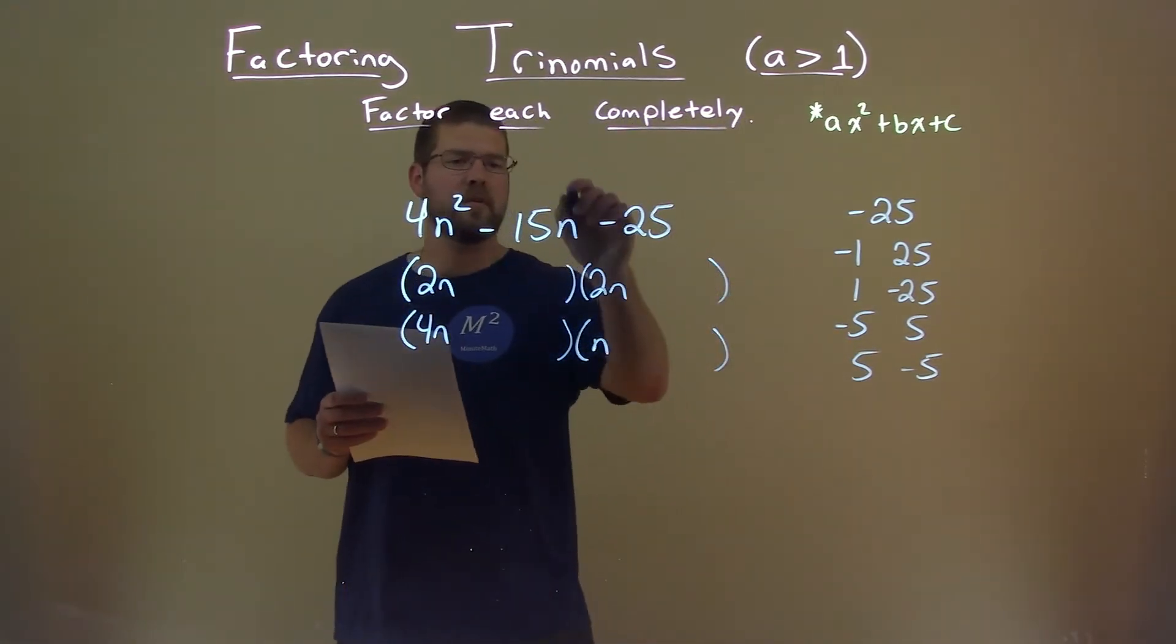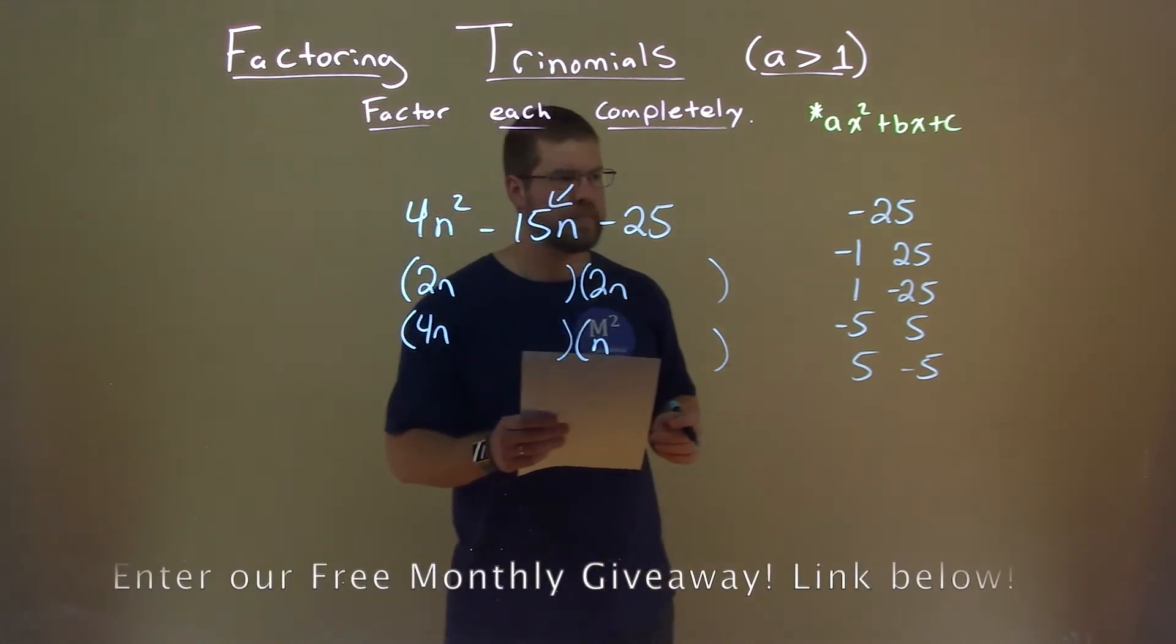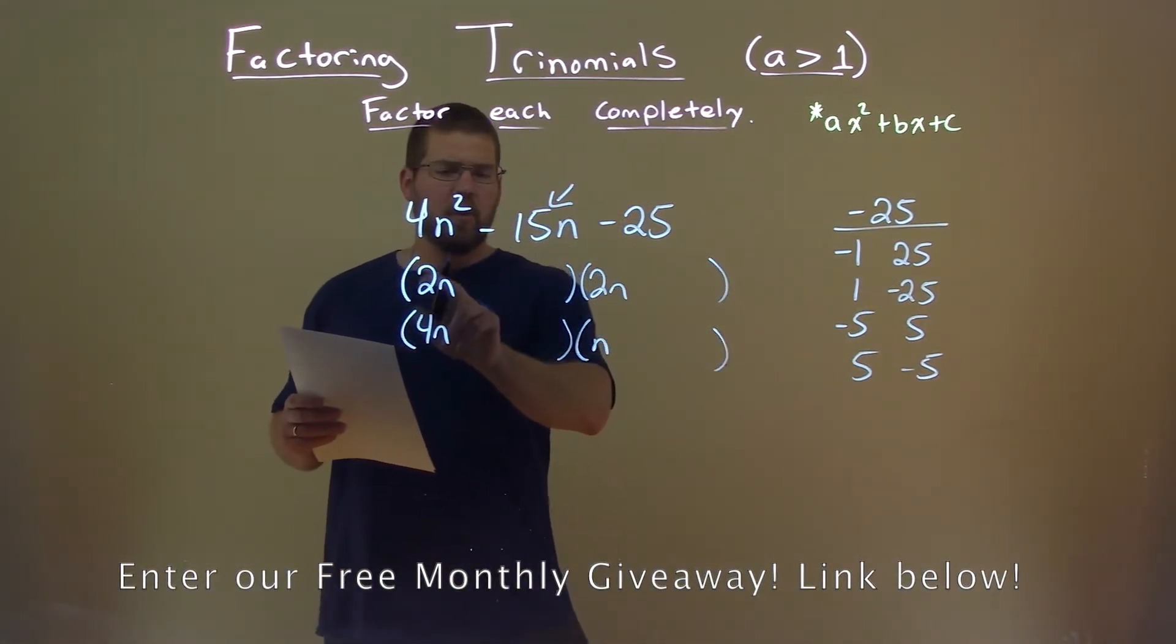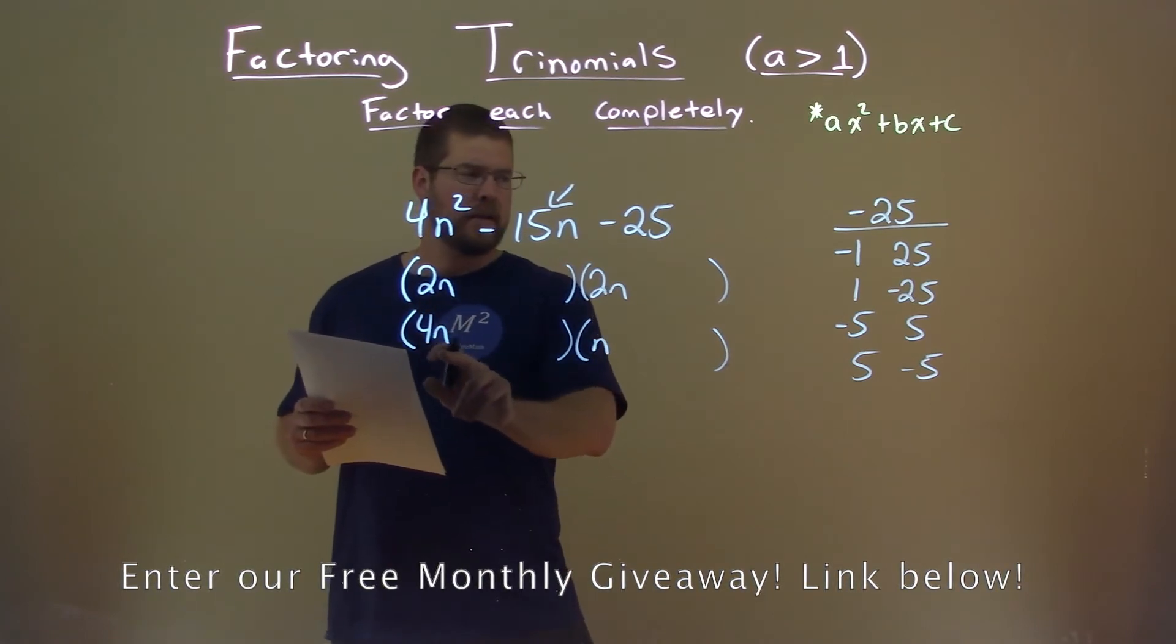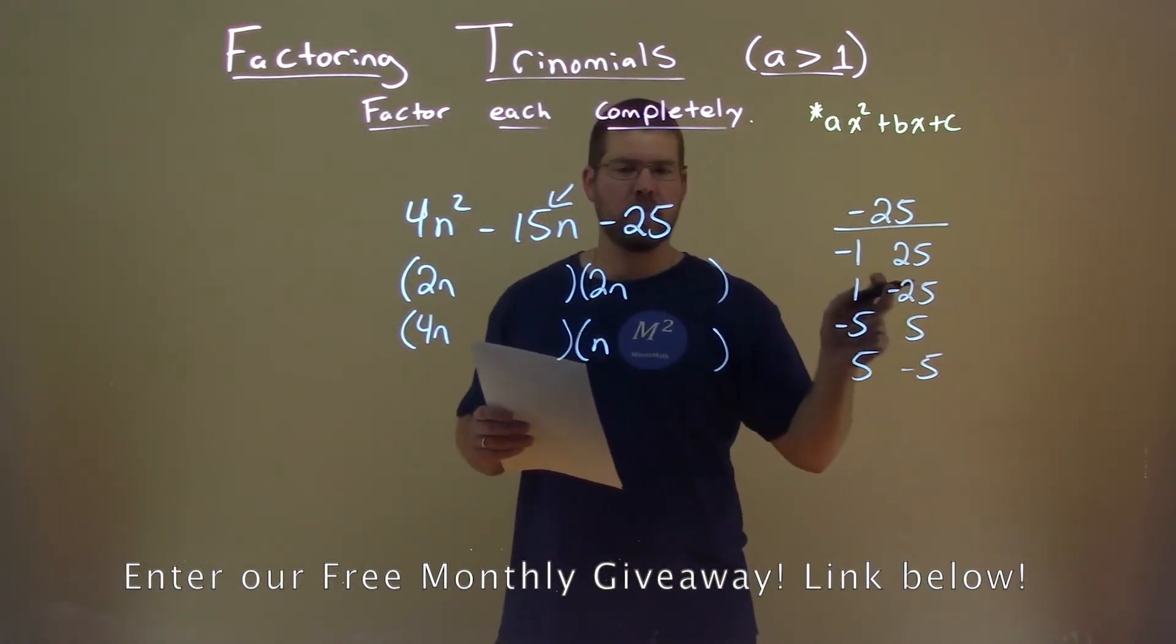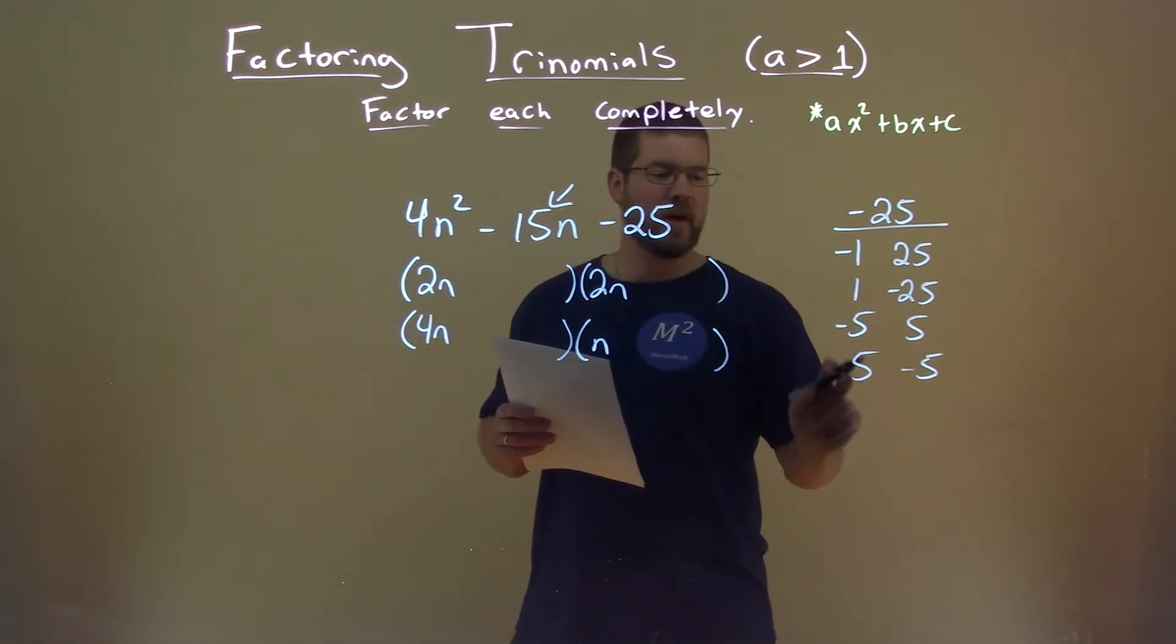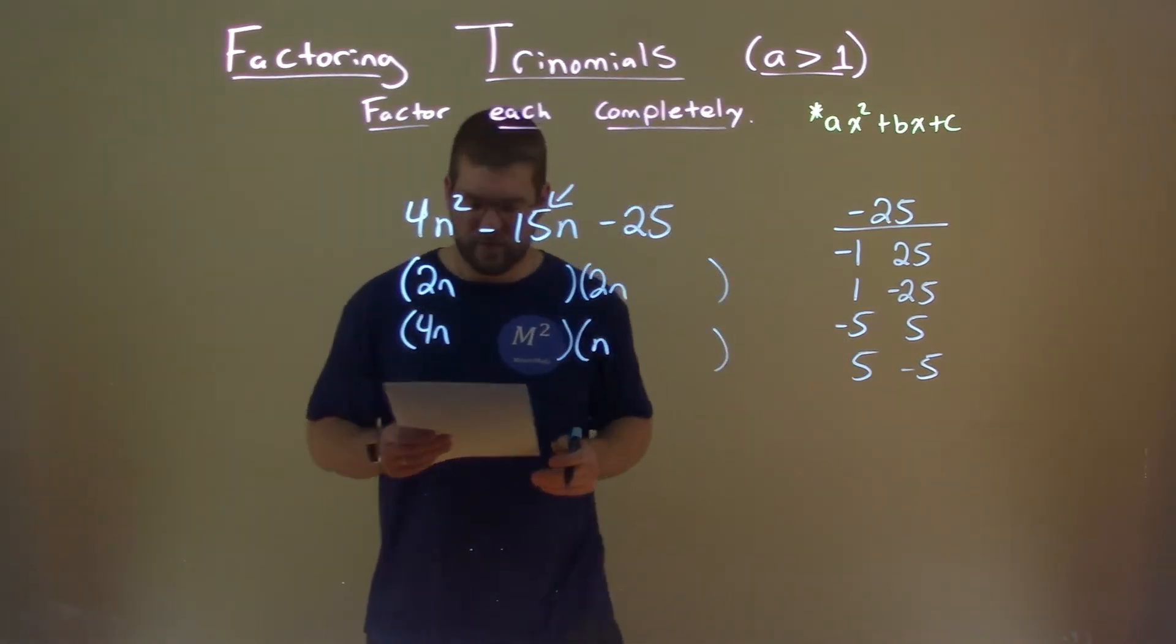Now with that information, we've looked at our b value, and we're thinking, okay, which one here—2n or 4n—times one of these numbers plus its corresponding 2n or 1n times the other number gets us negative 15?